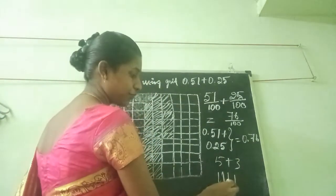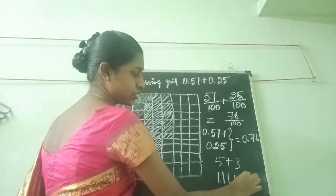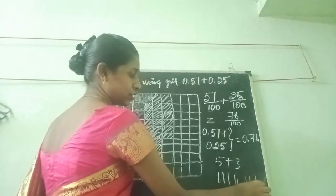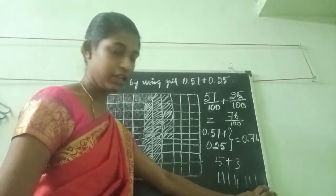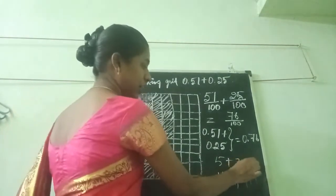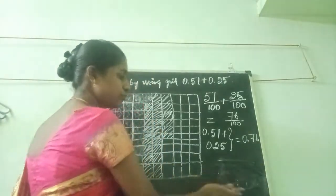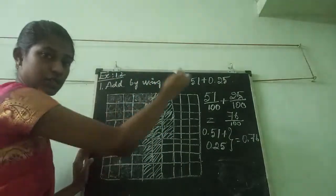We add 5, then count 1, 2, 3, 4, 5, 6, 7, 8 — so 5 plus 3 equals 8. Like this we put. Now we are going to put in box.